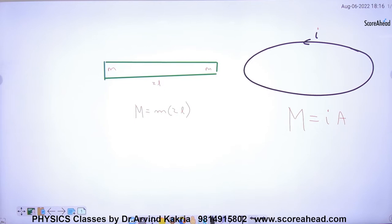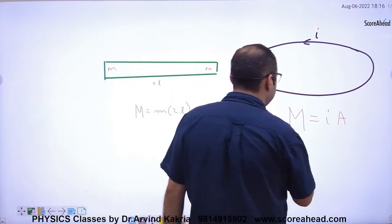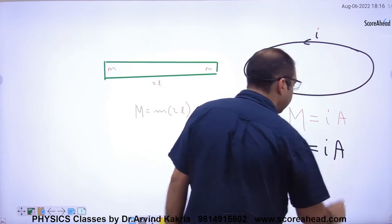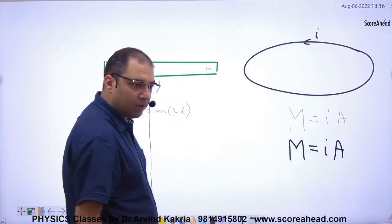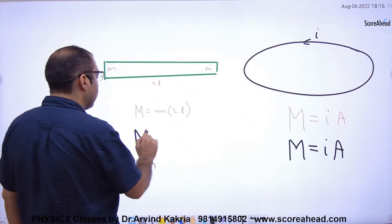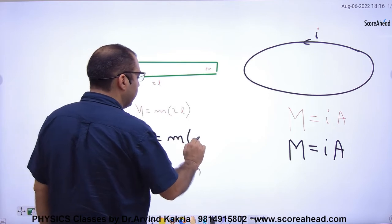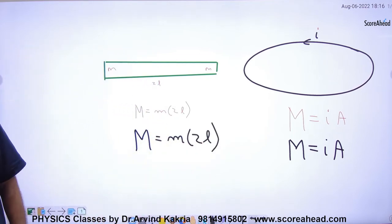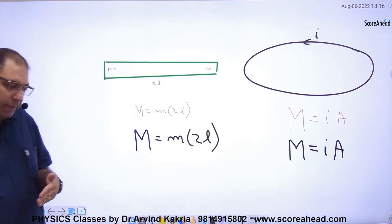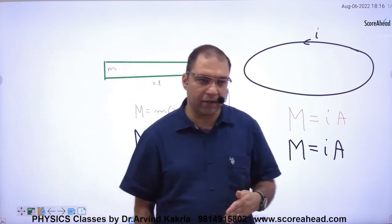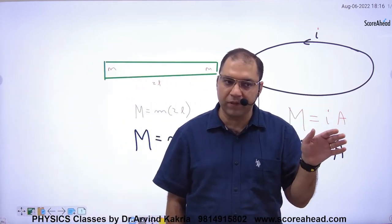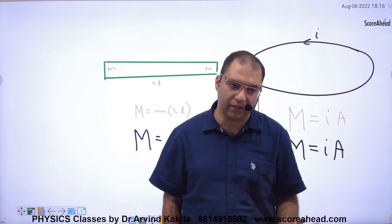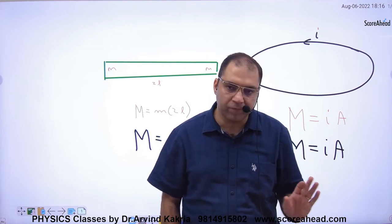So to summarize: for a current-carrying loop, capital M equals current into area. For a bar magnet, capital M equals small m into 2L. We now have two categories — current-carrying loop or bar magnet — with different formulas for each.